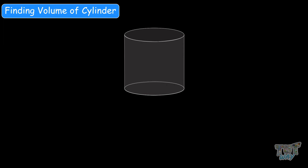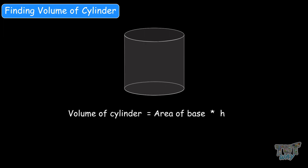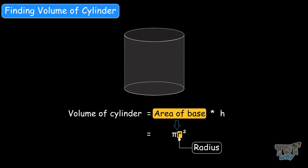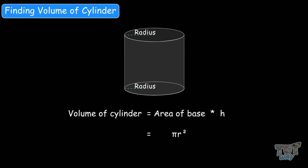Now here we have a cylinder. How do we find the volume of a cylinder? In the case of a cylinder, you have to multiply the area of the base by height. Area of the base is π r squared, where r is the radius. And you multiply that by height — that will be the volume of the cylinder.